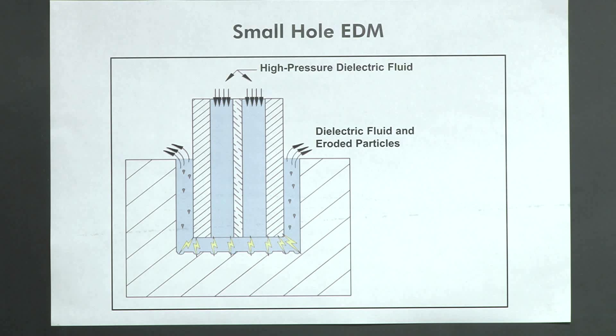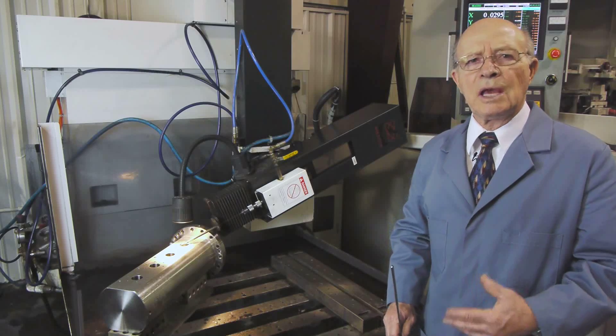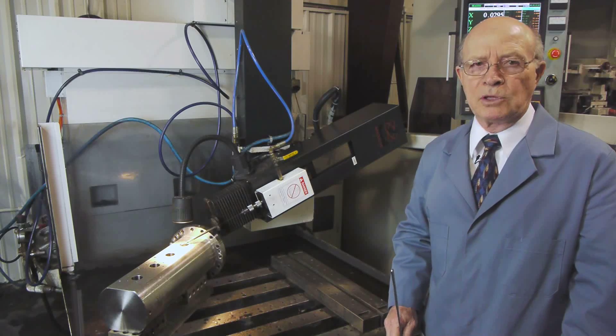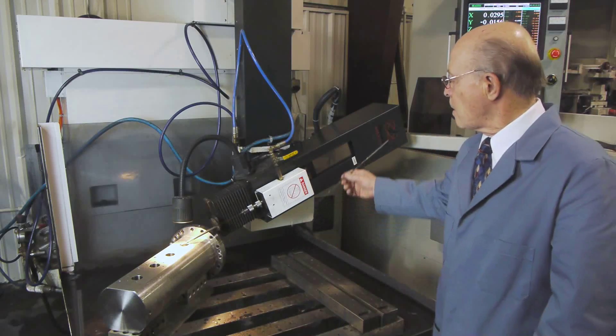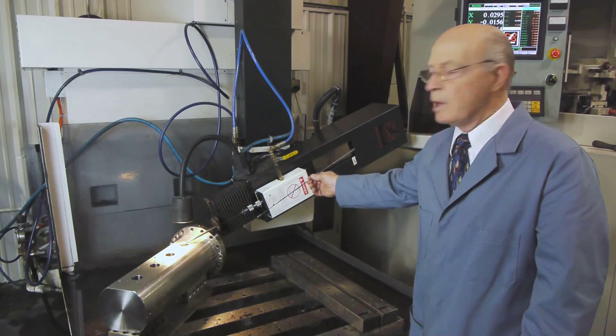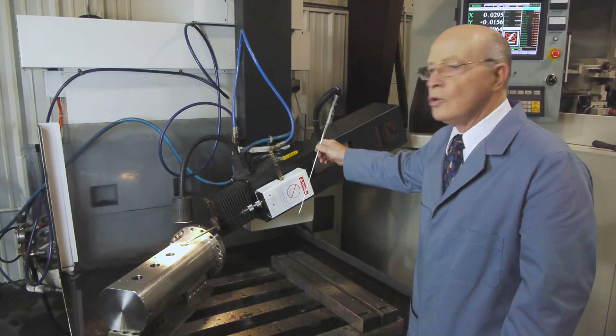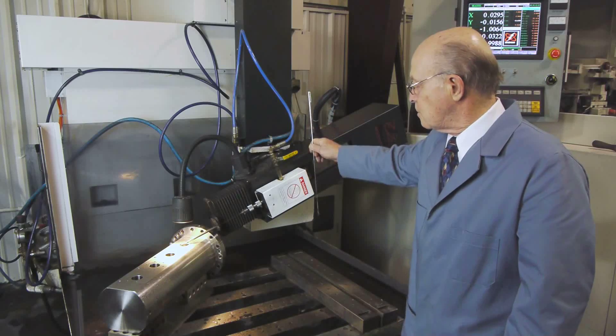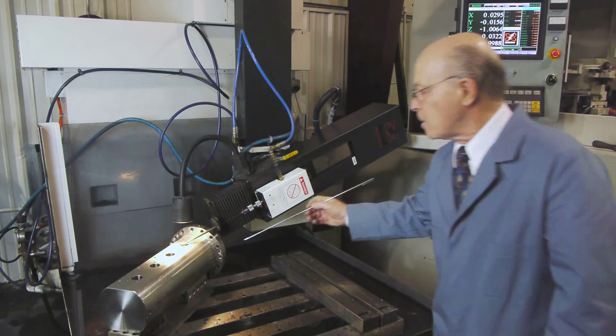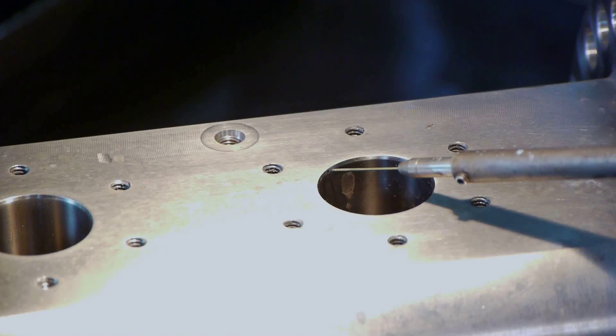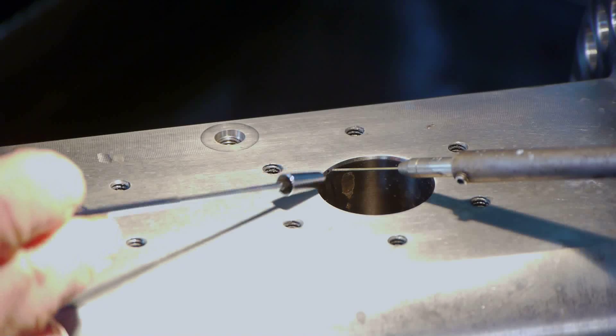Let's go to the shop and examine small hole EDM working. This is a CNC small hole EDM machine. Right now, this is at 70 degrees, and we can put it at different angles. Usually, we do it in a vertical position. And right now, we're EDMing a small hole from this corner right into this cavity.